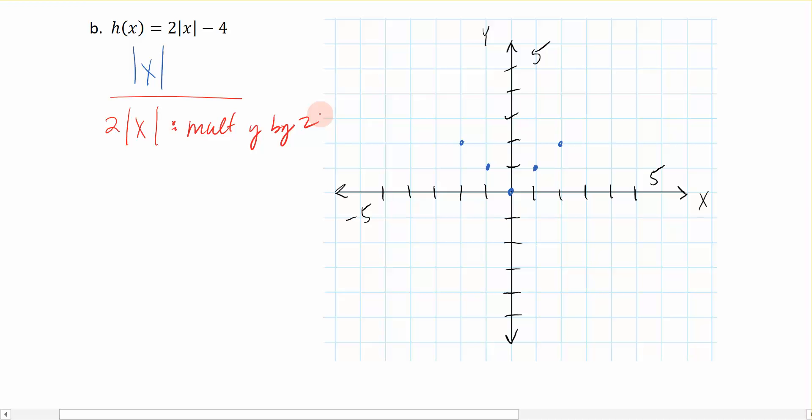And the best way to do that is to just jump in and put some points down that we already know. I know for sure that I have the point 0, 0 in my parent function. I also have the point 1, 1. And I have the point 2, 2.